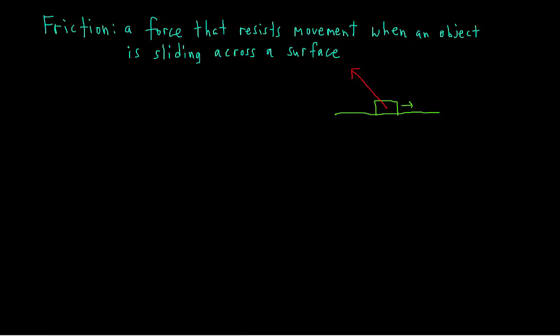We break that contact force into its vertical and horizontal components. The vertical component — the part that's perpendicular to the surface — that's what the normal force is. The normal force is the surface exerting some force on the object. And the horizontal part, the part that's parallel to the surface, that's called friction.